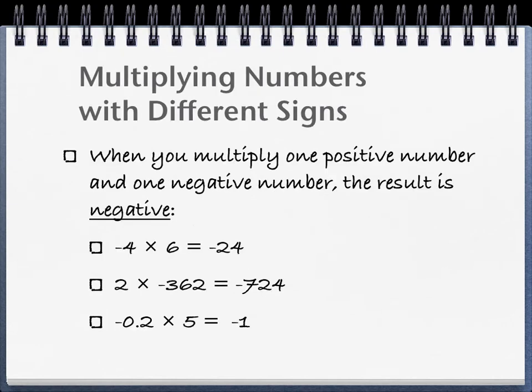Now, when you're multiplying numbers with different signs, when you have one positive number and one negative number, that's when the result is going to be negative. So negative 4 times positive 6, negative 24. Positive 2 times negative 362, negative 724. Negative 0.2 times positive 5, for those of you who understand decimals, negative 1.